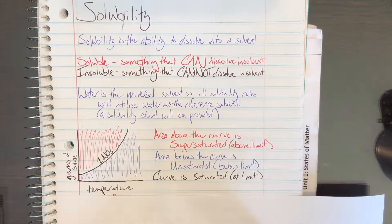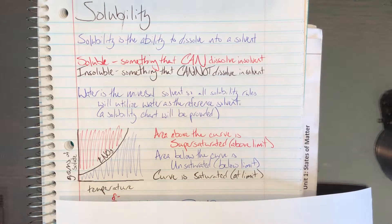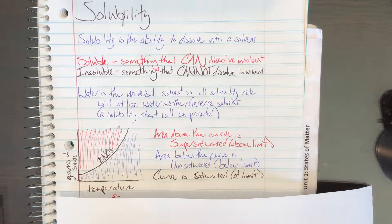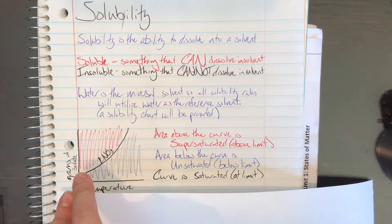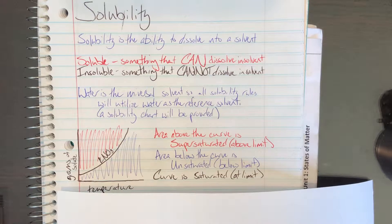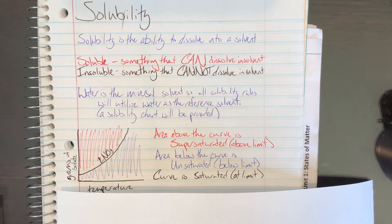This is a solubility curve, and it shows how much of a particular compound can dissolve in a particular amount of water at what temperature. Here, we have potassium nitrate as our compound being dissolved. On the y-axis, I have the grams of solute.